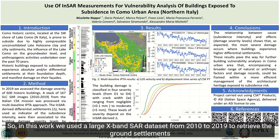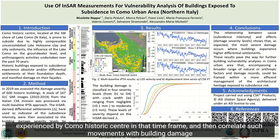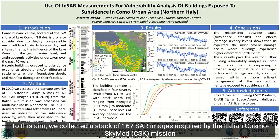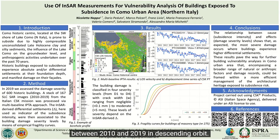In this work, we used a large X-band SAR dataset from 2010 to 2019 to retrieve the ground settlements experienced by Como historic center in that timeframe, and then correlated such movements with building damage using empirical fragility curves as a first attempt of vulnerability analysis for the city. To this aim, we collected a stack of 167 SAR images acquired by the Italian COSMO-SkyMed mission between 2010 and 2019 in descending orbit.